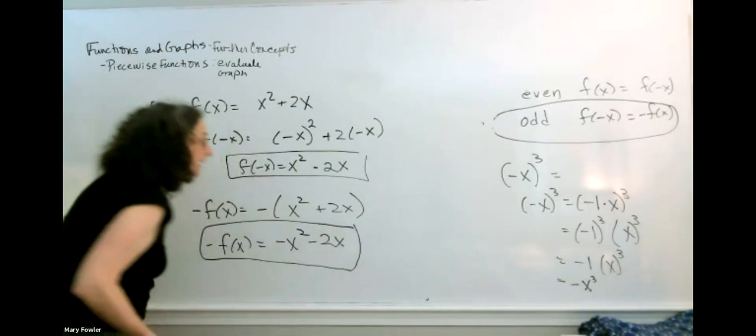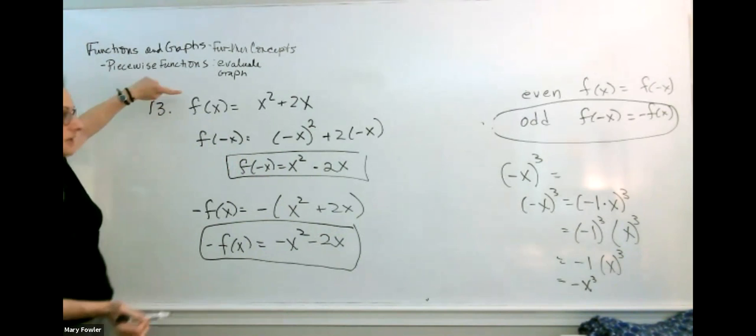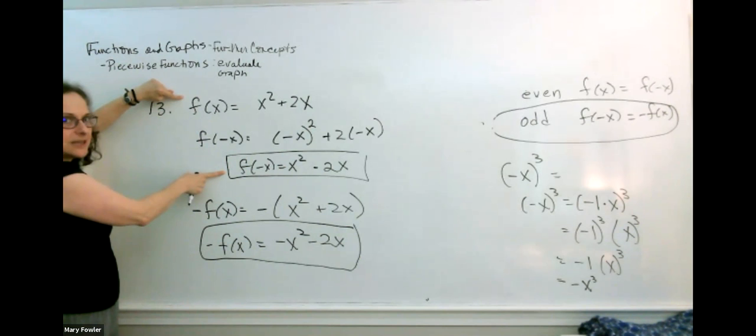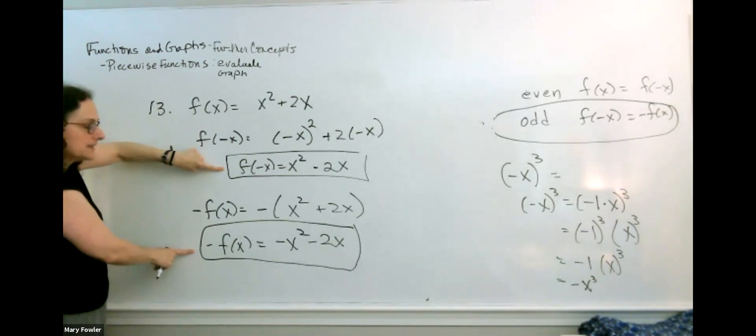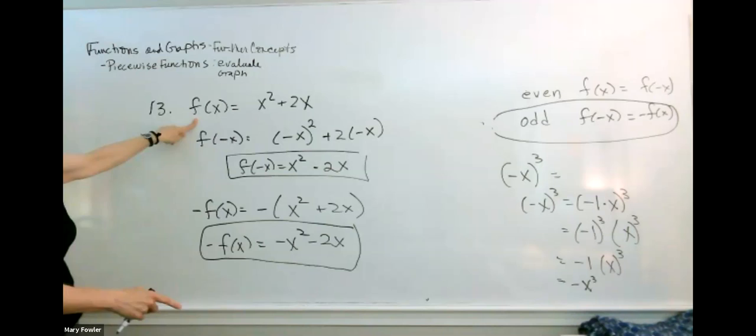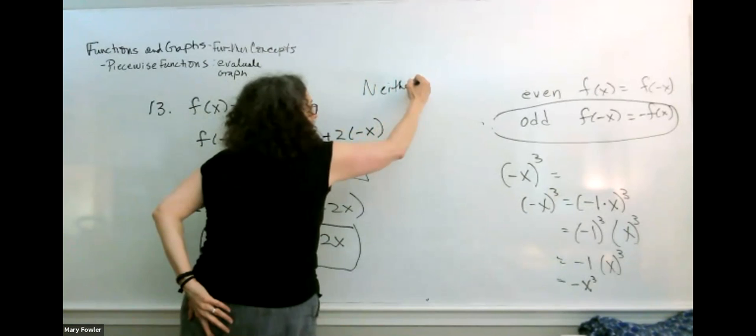Okay, looking at the conditions, which checks for even, does f of x equal f of minus x? No, the function is not even. And for odd, does f of minus x equal minus f of x? It does not. So here's an example of a function that is neither even or odd.